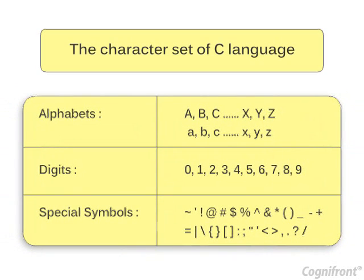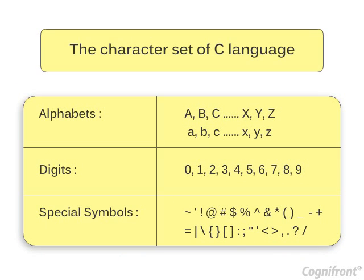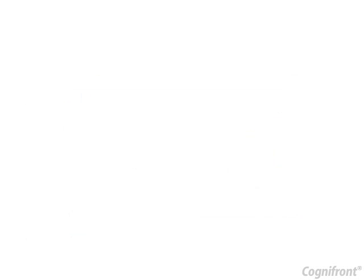The character set of C language consists of alphabets, digits and special symbols as shown. When the alphabets, digits or special characters are combined, the constants, variables and keywords are formed.